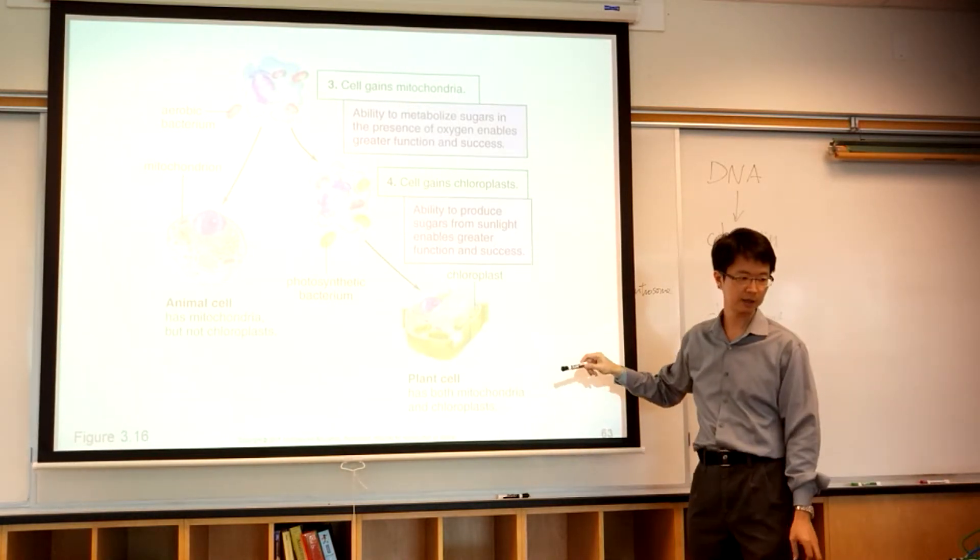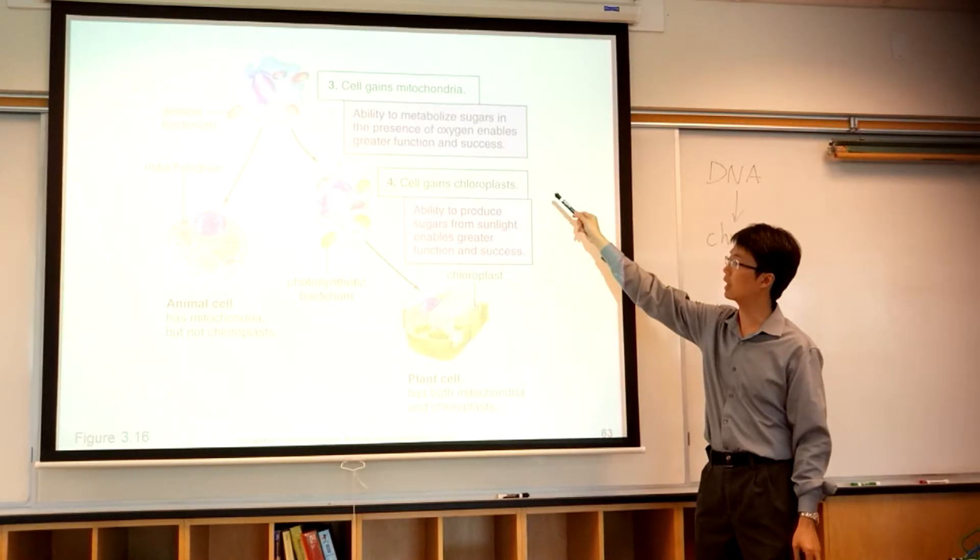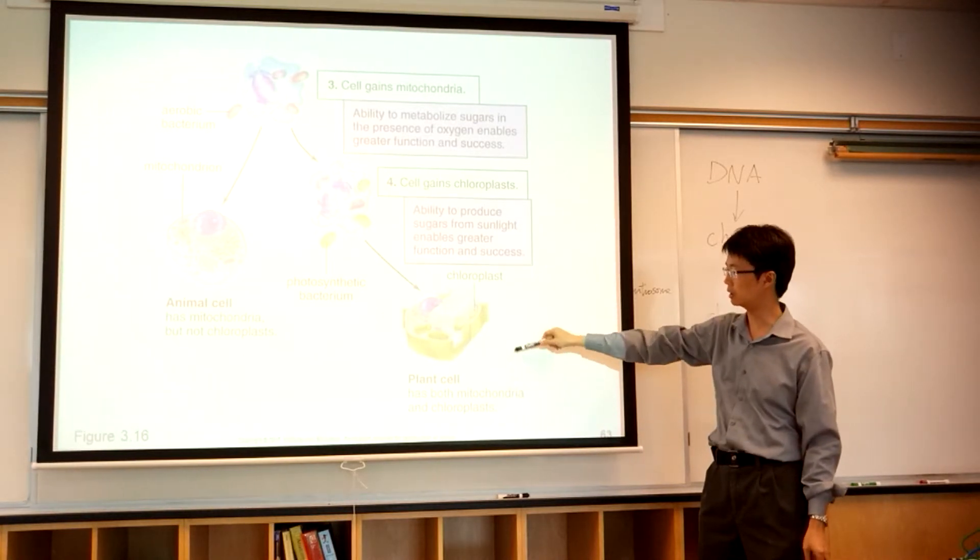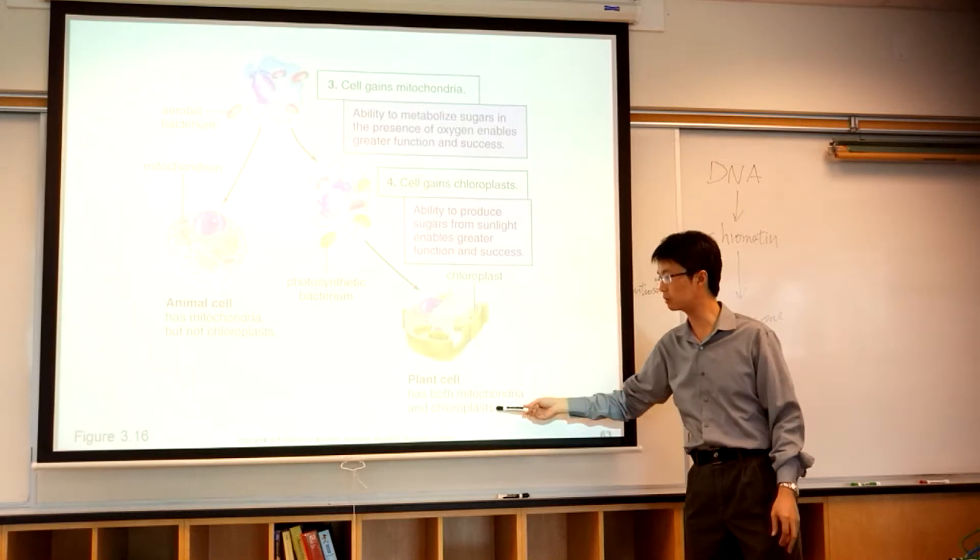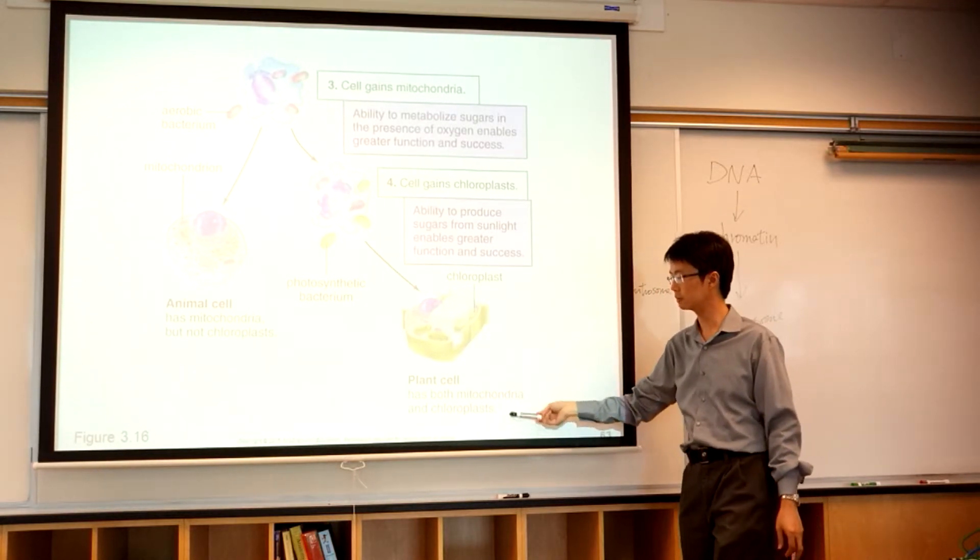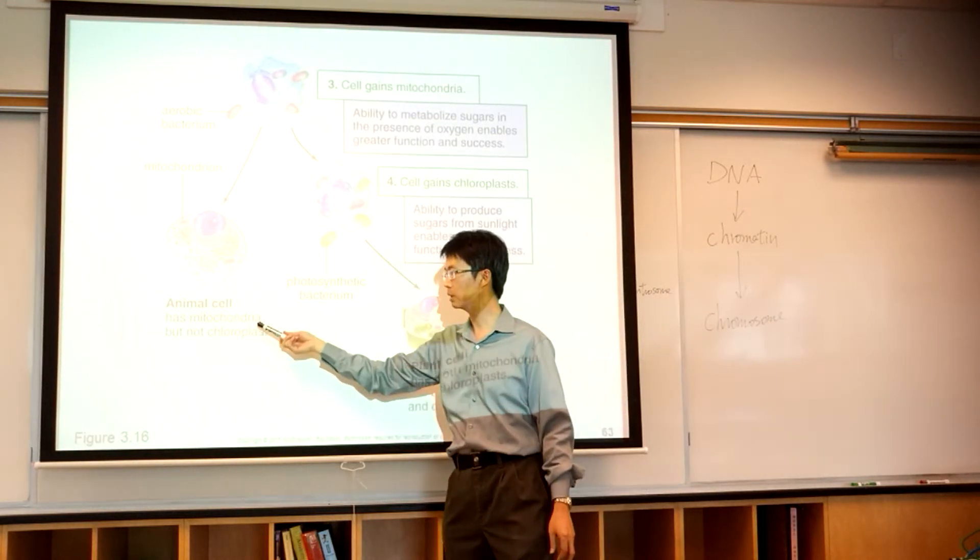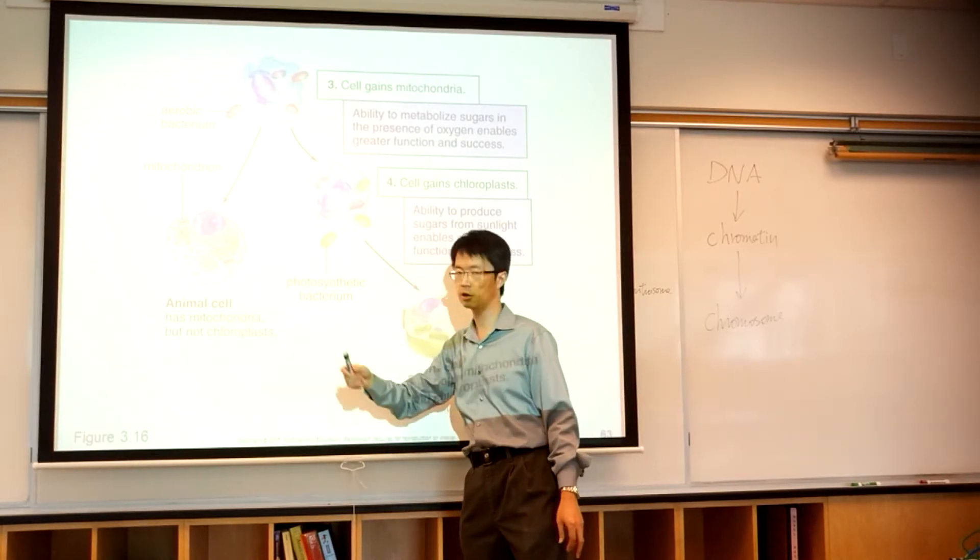So, the cell gains chloroplasts and mitochondria here to become plant cells. Plant cells have both mitochondria and chloroplasts—this is important. Animal cells have mitochondria, but not chloroplasts.